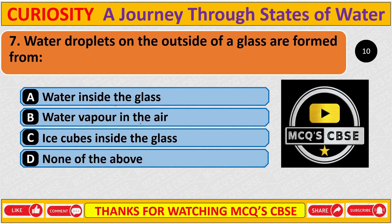Water droplets on the outside of a glass are formed from? The correct answer is B: Water vapour in the air.